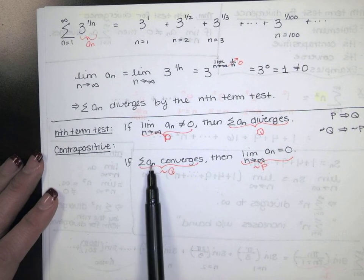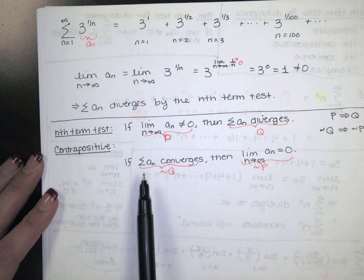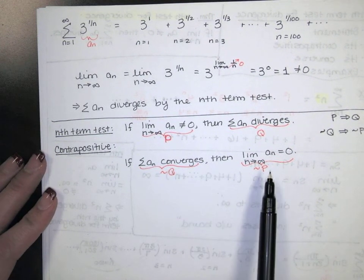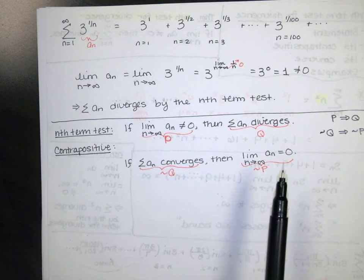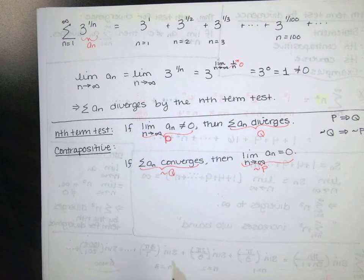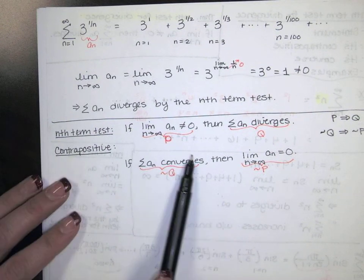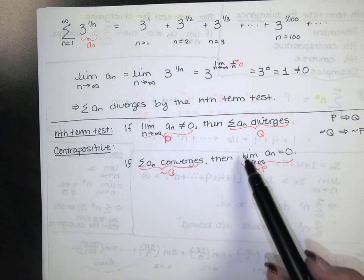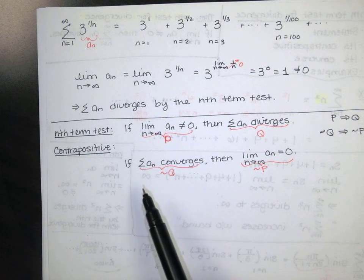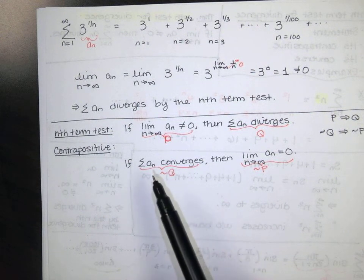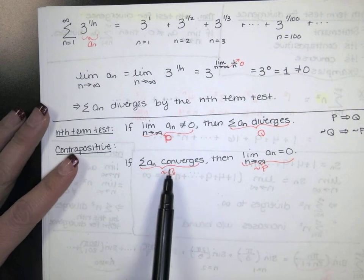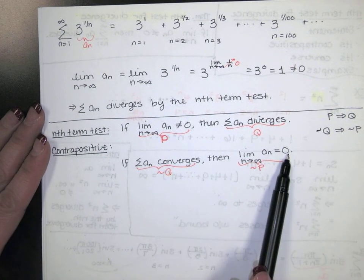That's saying: if we can add all of those numbers together — infinitely many of them — and get a finite number, then it has to be the case that all of those pieces we're adding together get smaller and smaller. Remember when we looked at the geometric series with one half to the n? The reason we could add up all those pieces was because they were so small that they sort of fit together and the sum approached a finite number. So if the series converges, a sub n must be getting smaller and smaller toward 0, so that when you add them up, the sum is finite. If the series converges, the limit of a sub n is 0.